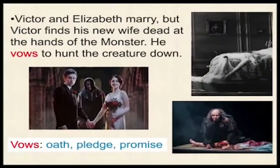Victor and Elizabeth marry, but Victor finds his new wife dead at the hands of the monster. He vows to hunt the creature down — he pledges and takes an oath to himself that he will hunt, kill, and destroy the creature.